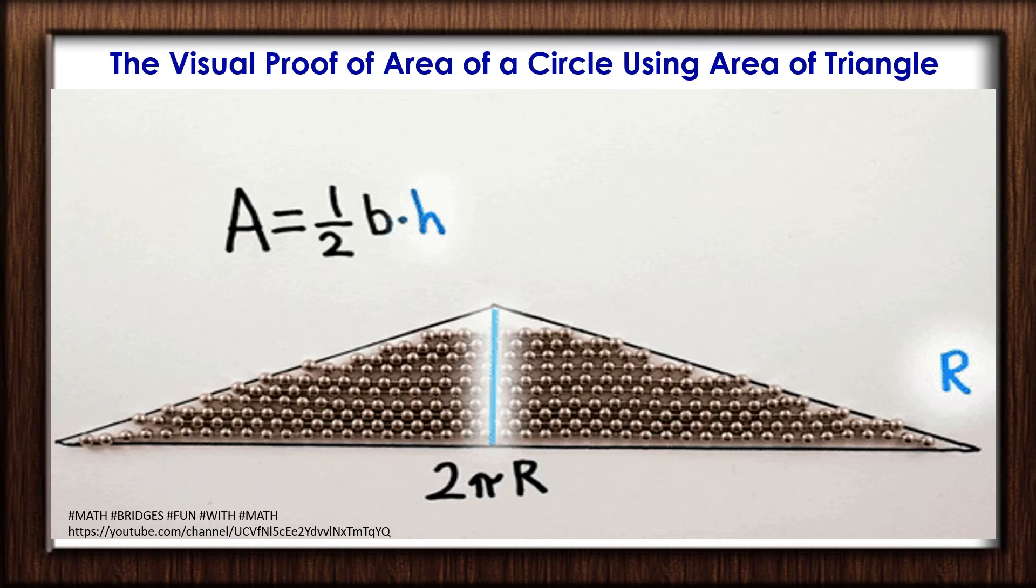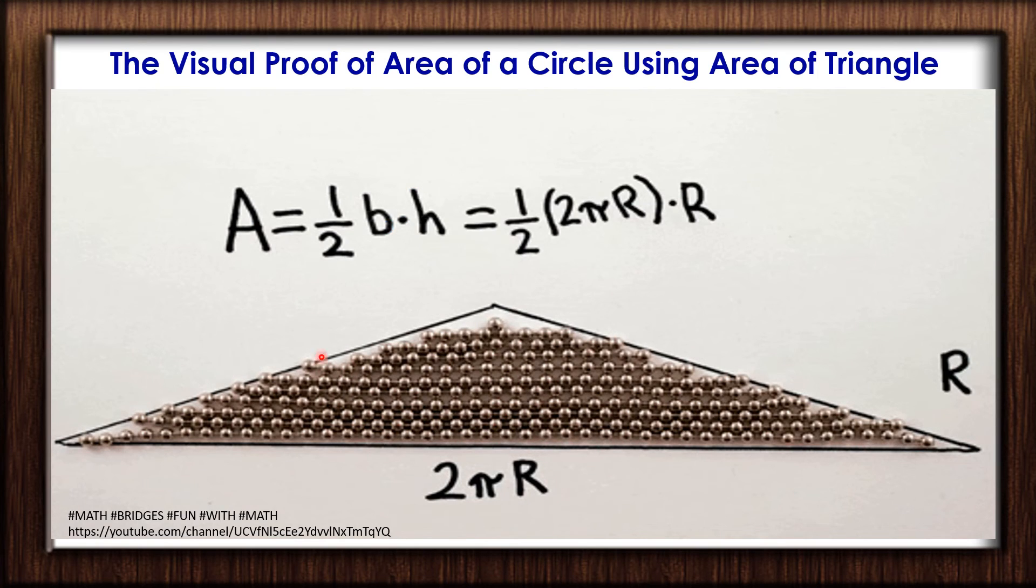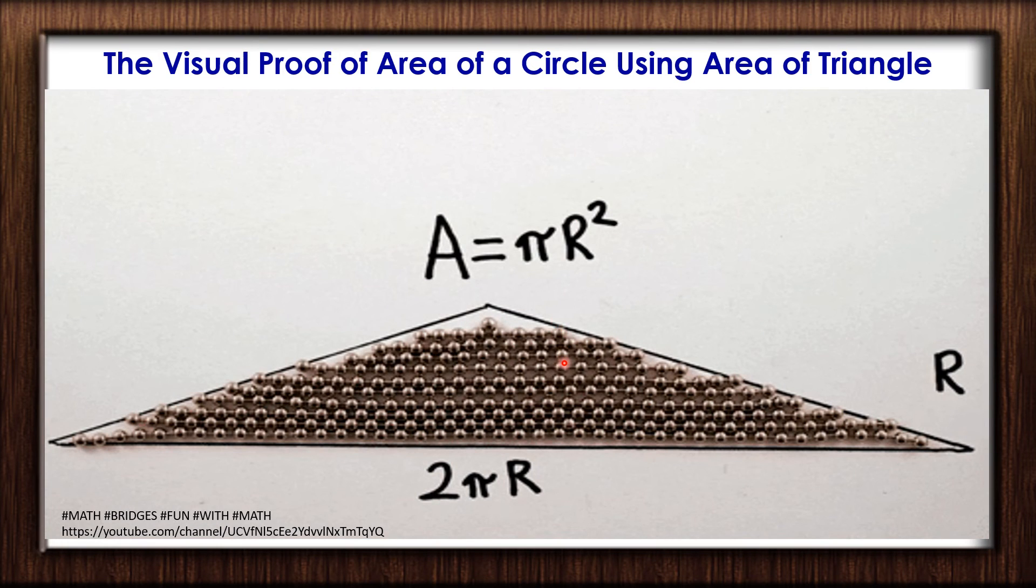Now we will substitute and find the formula. The formula we have is half into base into height: base is 2πr and height is r. This 2 and 2 gets cancelled. So, π times r times r equals πr². Therefore, the area of circle formula is πr².